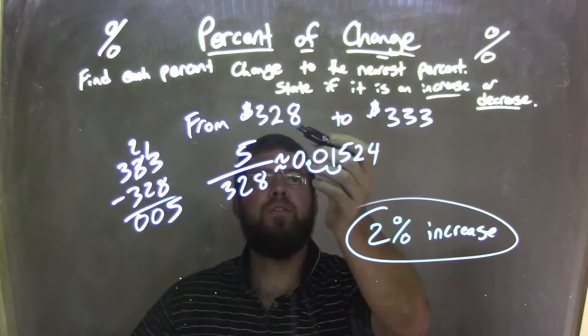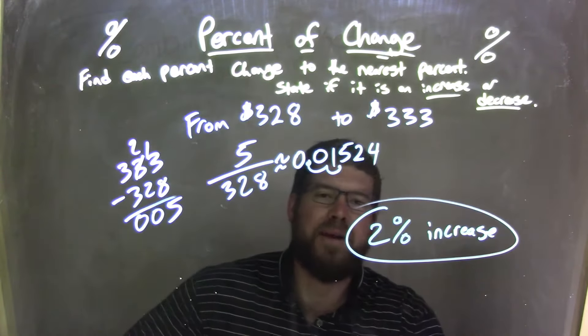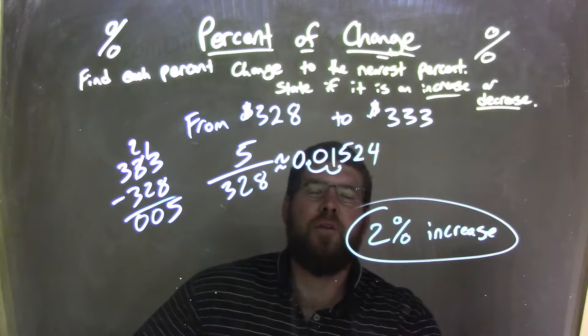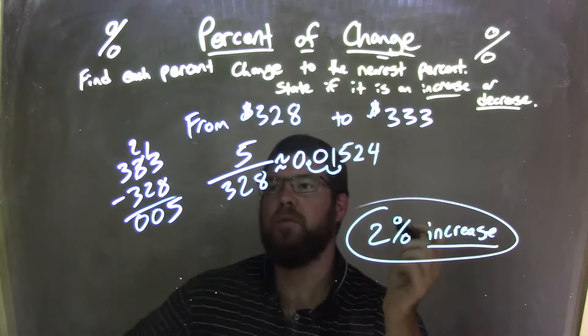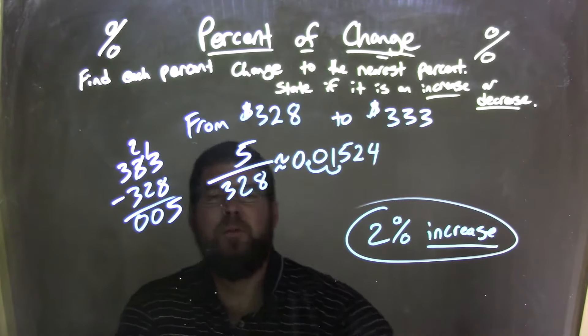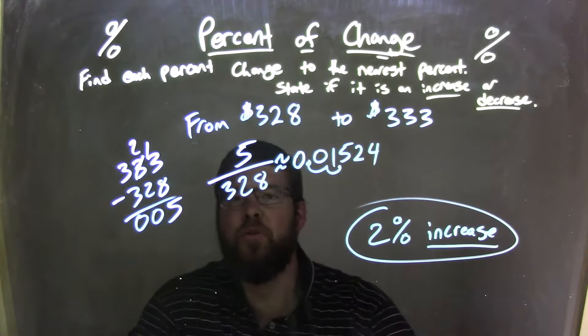So let's recap. We start with $3.28 to $333. We need to know if it's an increase or a decrease. If it's going up, it's an increase between the two numbers. We then found the difference between them, and we got them to be a measly little five.